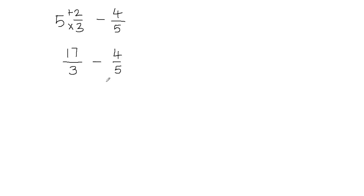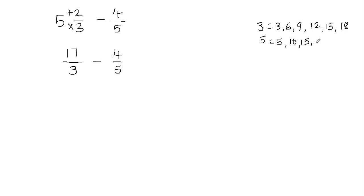But in some cases you cannot just multiply the denominators to find the least common multiple. So I'll show you a different strategy which will work in all cases. To find the least common multiple, I'm going to list down the multiples of 3 and 5. The multiples of 3 are 3, 6, 9, 12, 15, 18 and so on. The multiples of 5 are 5, 10, 15, 20, 25 and so on. I'm looking for the number which is common in both and which is the smallest — and I see that 15 is common in both and it's the smallest. So the least common multiple is 15. This strategy of finding the least common multiple will always work.